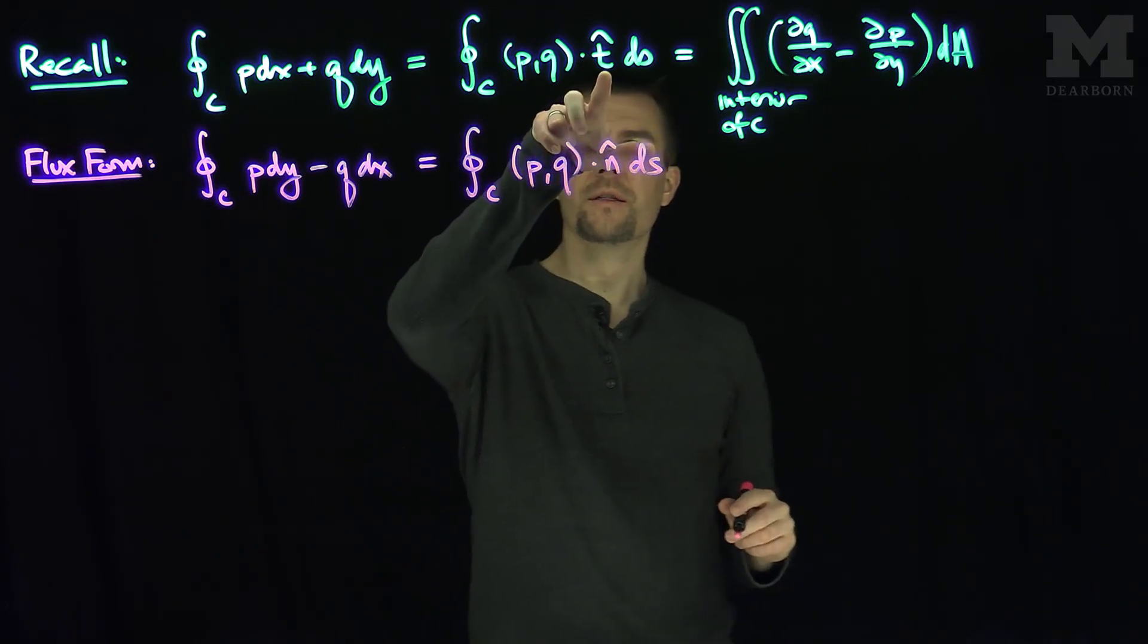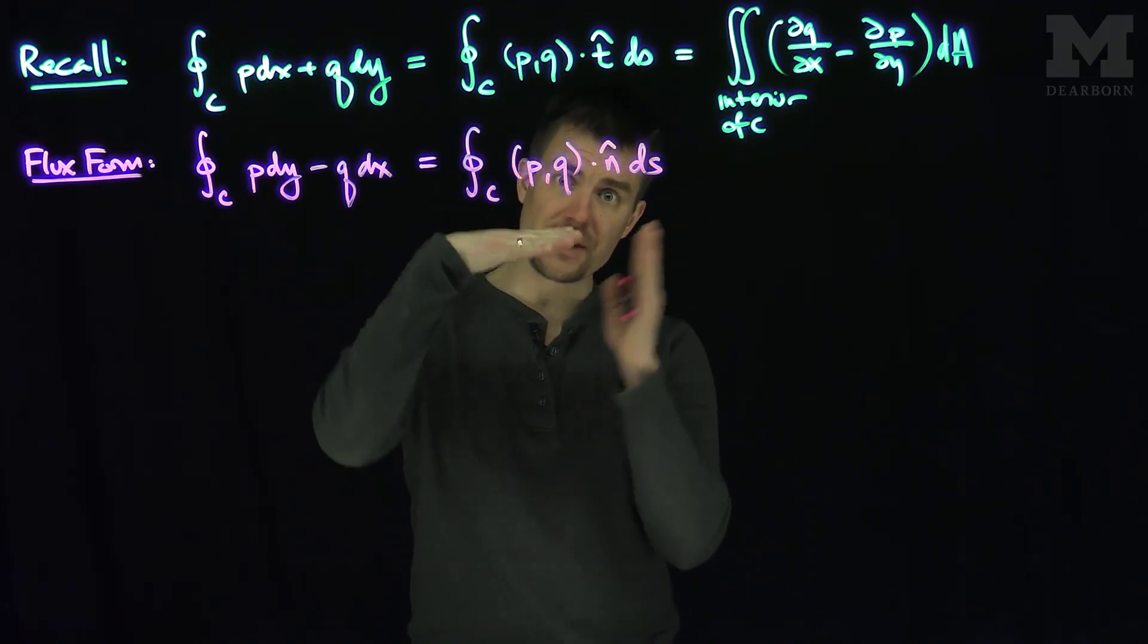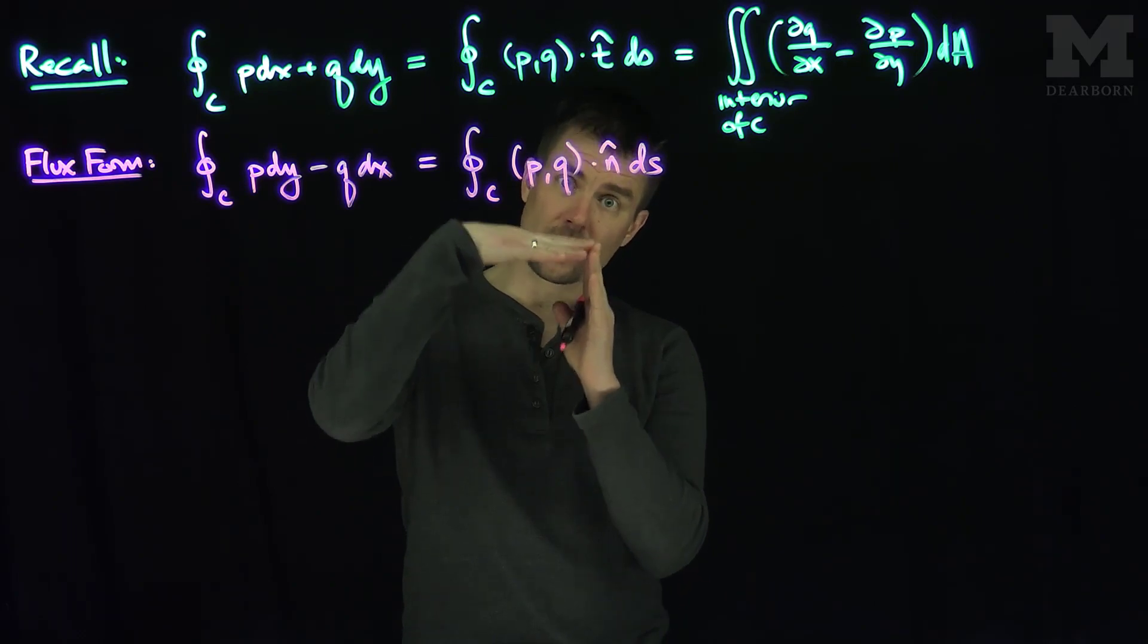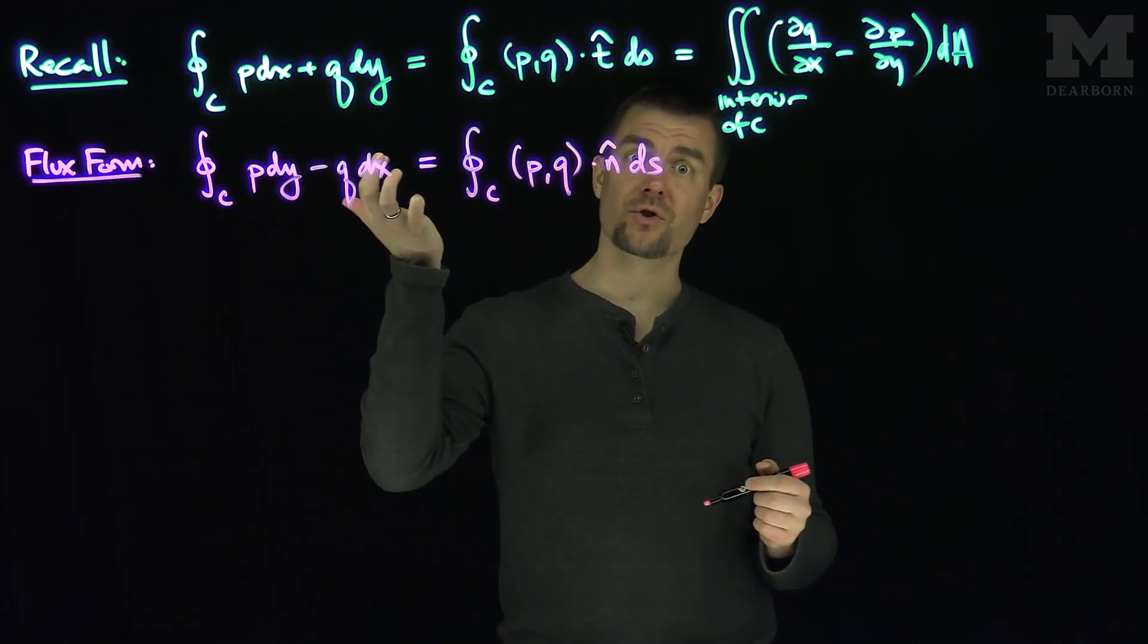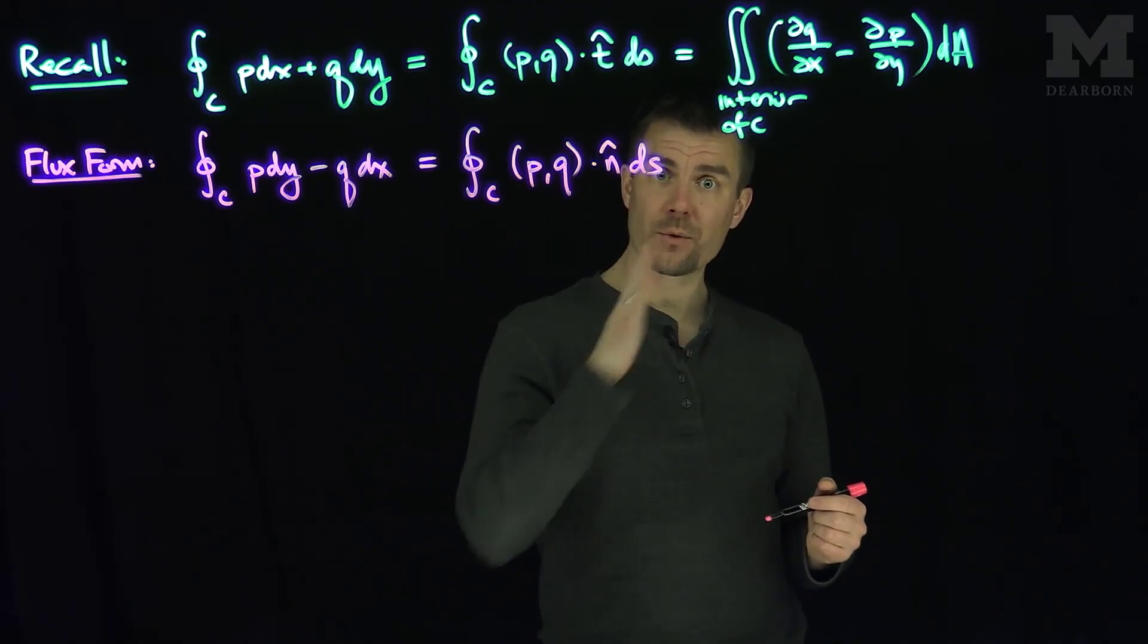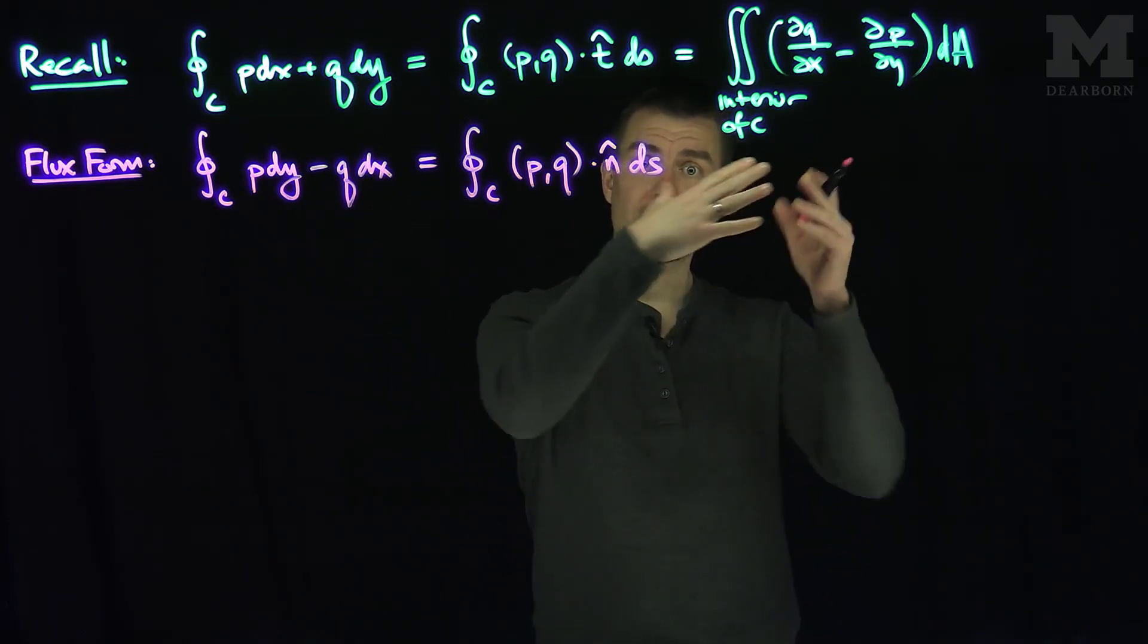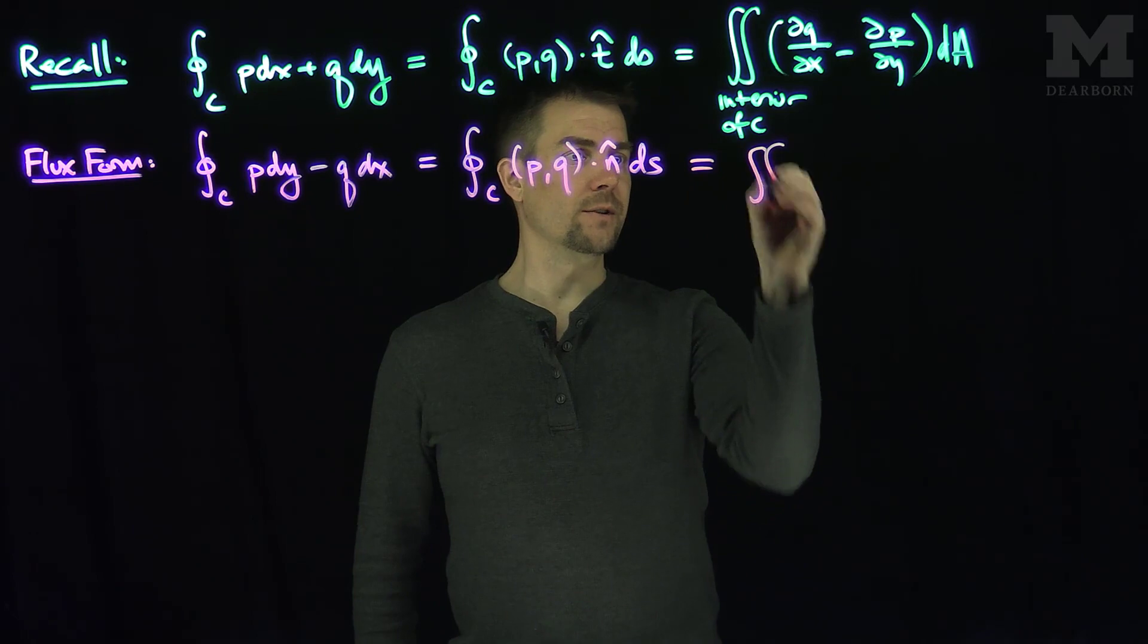So t hat is the unit tangent vector to the curve, and n hat is the perpendicular vector to the unit tangent vector, which is the unit normal vector with the right orientation. I've oriented this normal vector in such a way that I get the divergence here. I orient it in this direction so that I can get the divergence as my operator in Green's theorem.